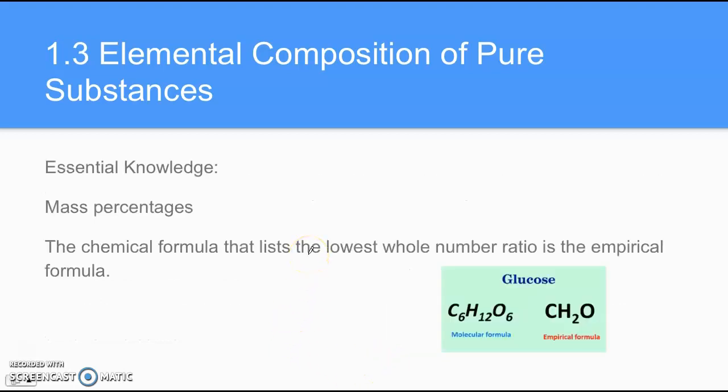And then along with that, we have mass percentages. And mass percent is just the mass of the element divided by the mass of the compound times 100 to get a percentage.